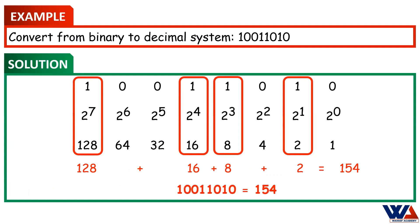The decimal value of the binary number 1, 0, 0, 1, 1, 0, 1, 0 is equal to 154.